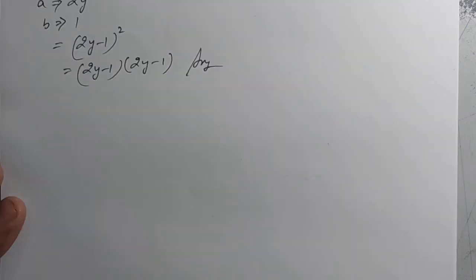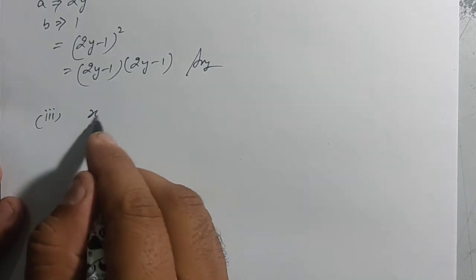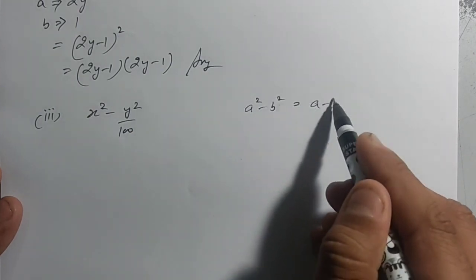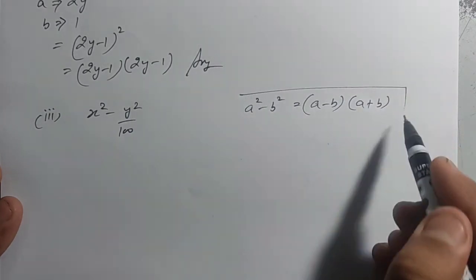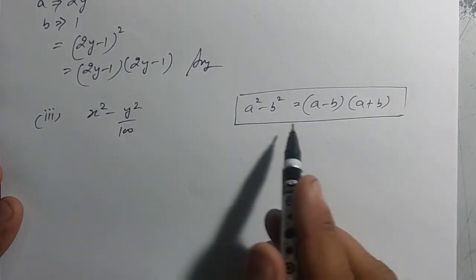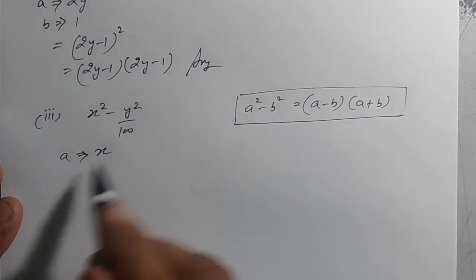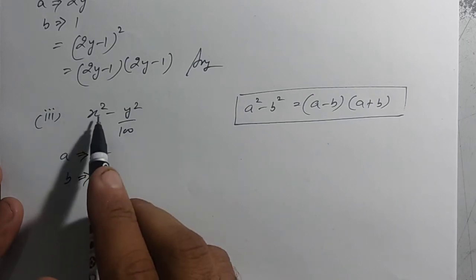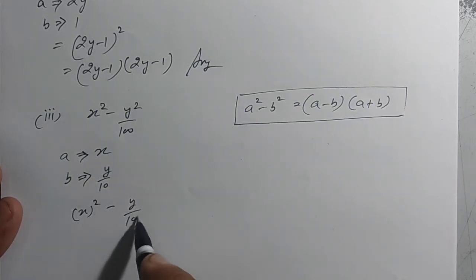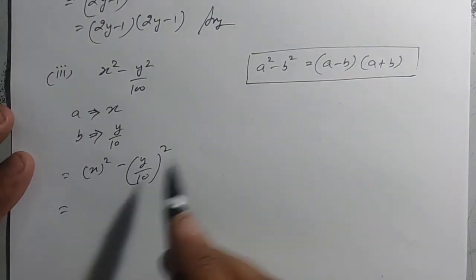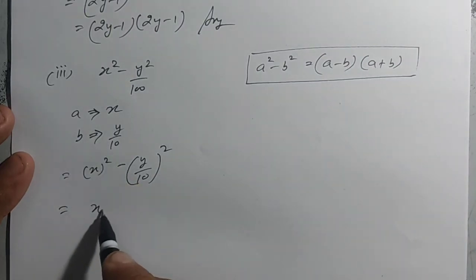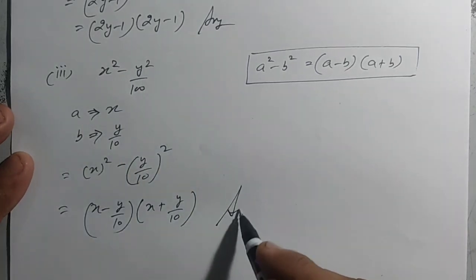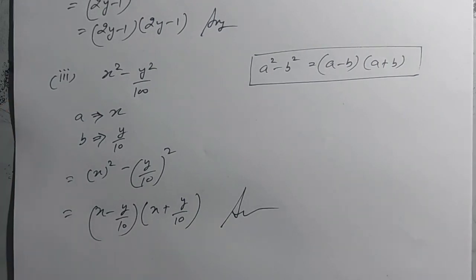Third part: x² − y²/100. Identity है: a² − b² = (a − b)(a + b). यहाँ a = x और b = y/10, क्योंकि (y/10)² = y²/100. तो answer: (x − y/10)(x + y/10). Identity की help से factorize हो गया।